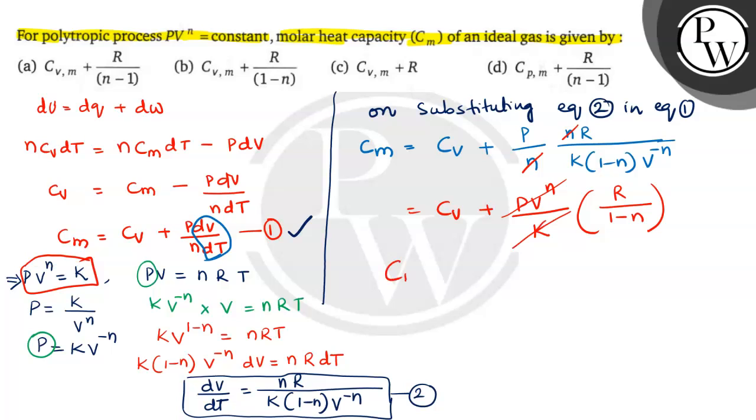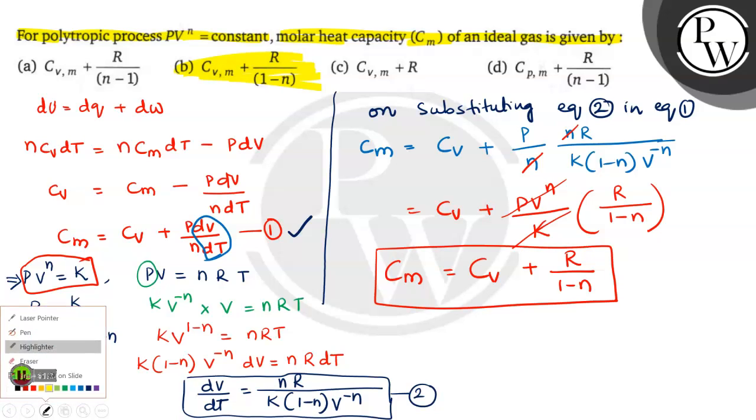So Cm = Cv + R/(1-n). This is our answer. Option 2 is correct. Hope you understood, good luck.